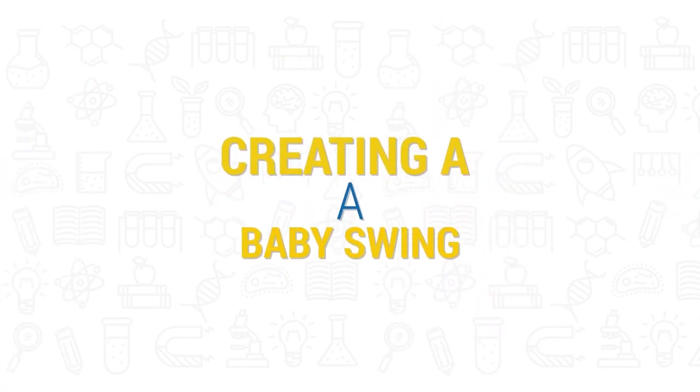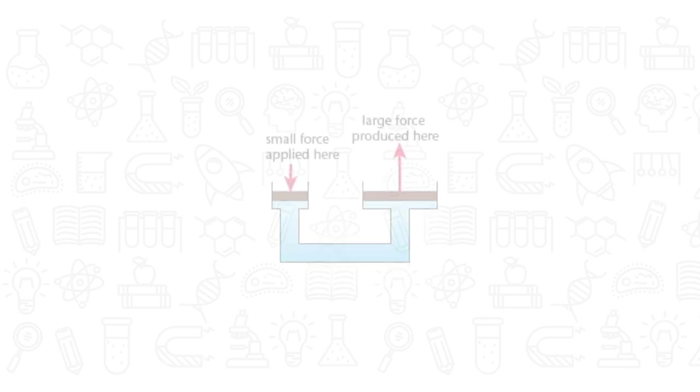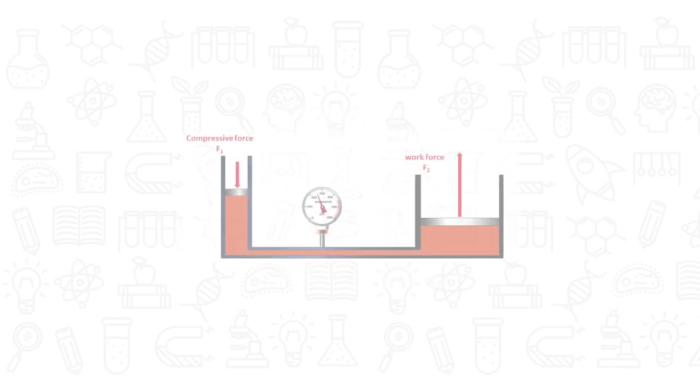Creating a baby swing. Hydraulic machines are machines which use liquids to transmit forces. This is called hydraulic pressure.